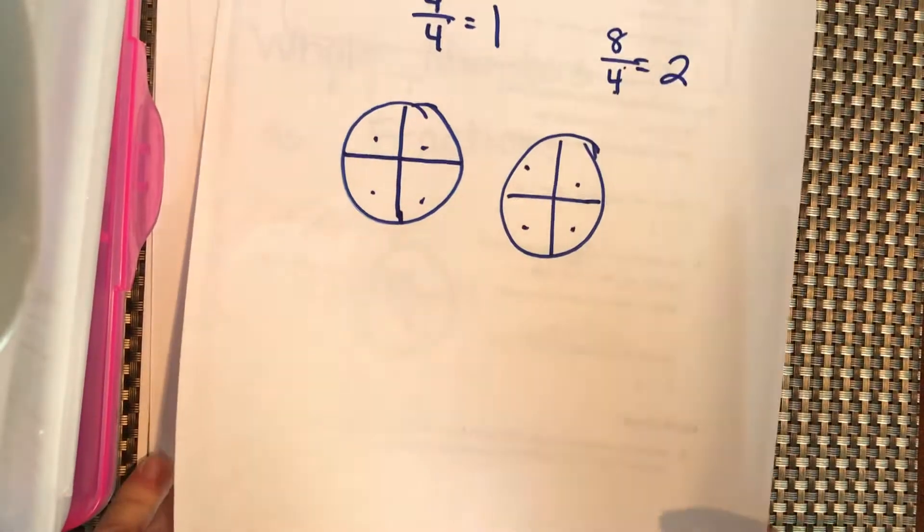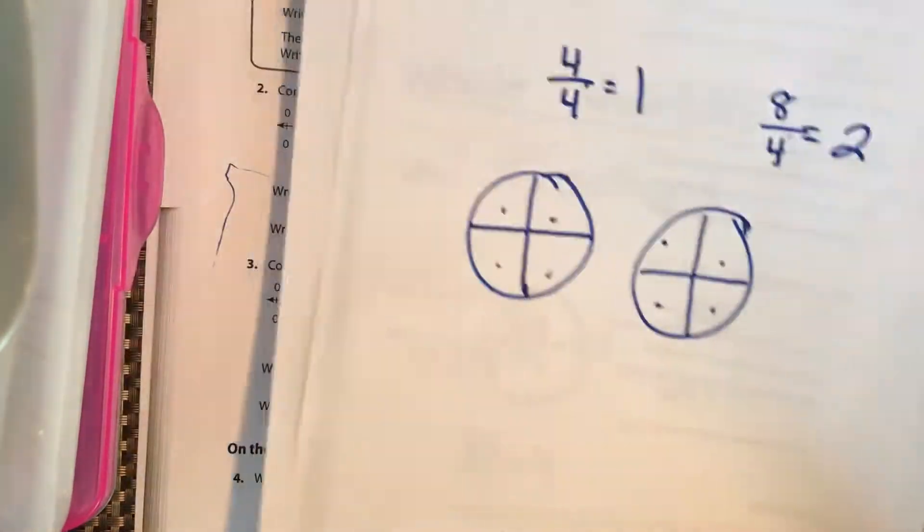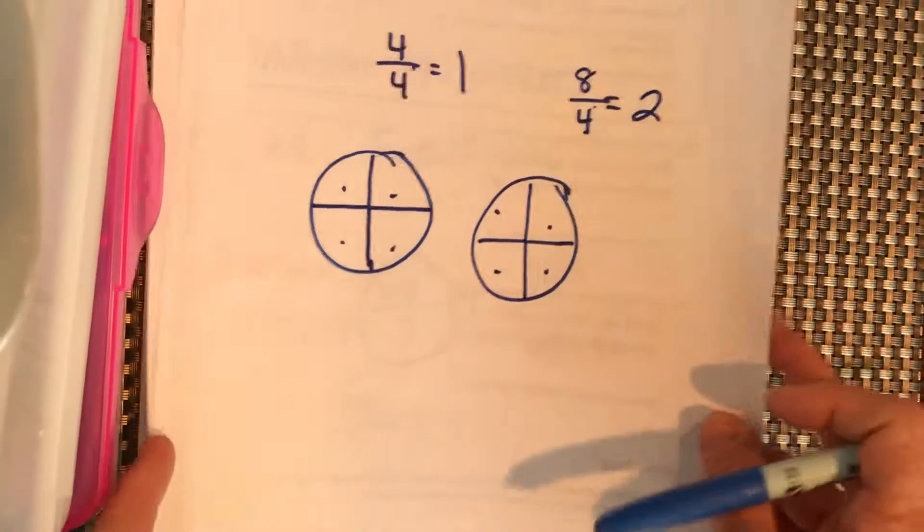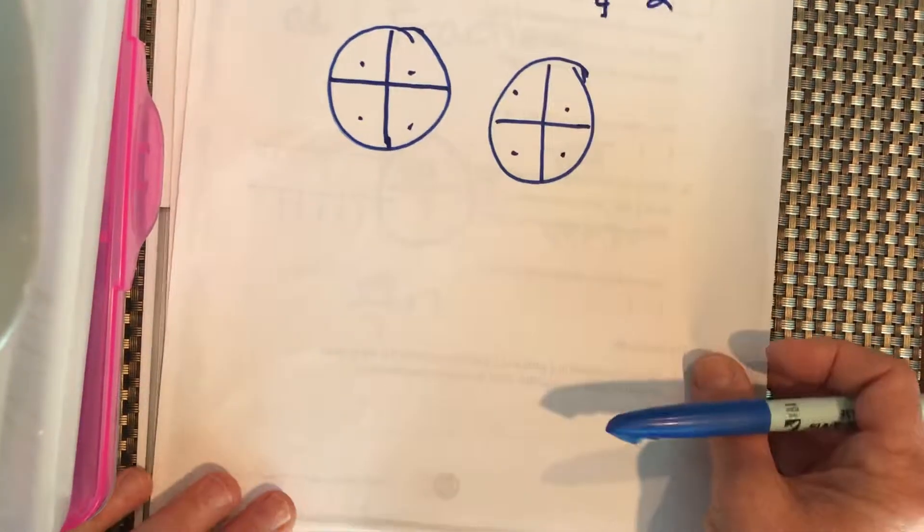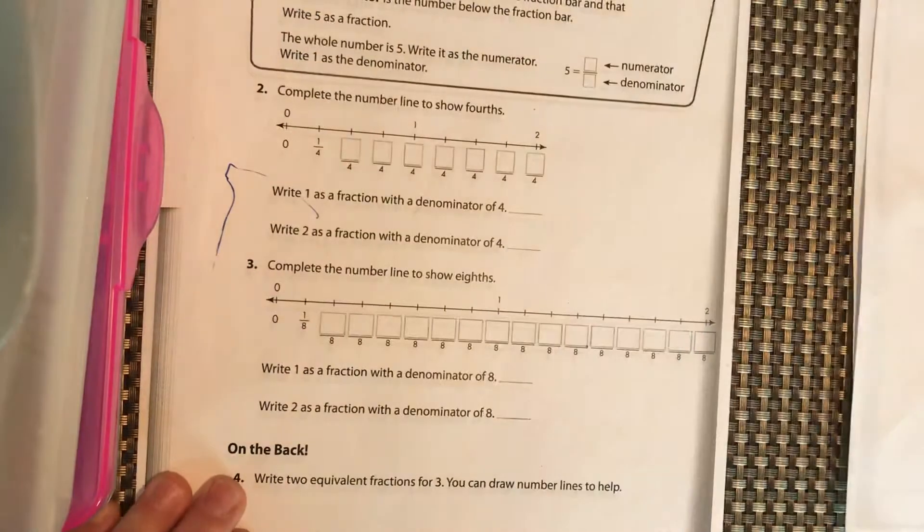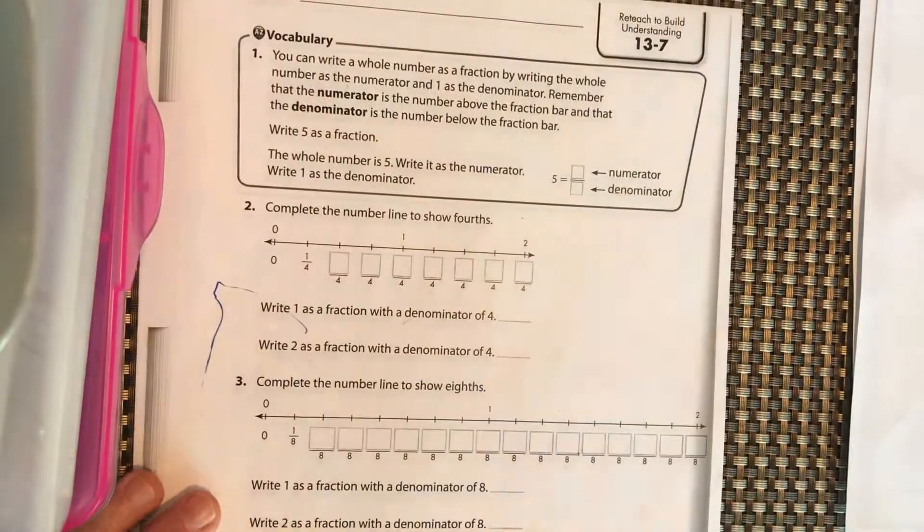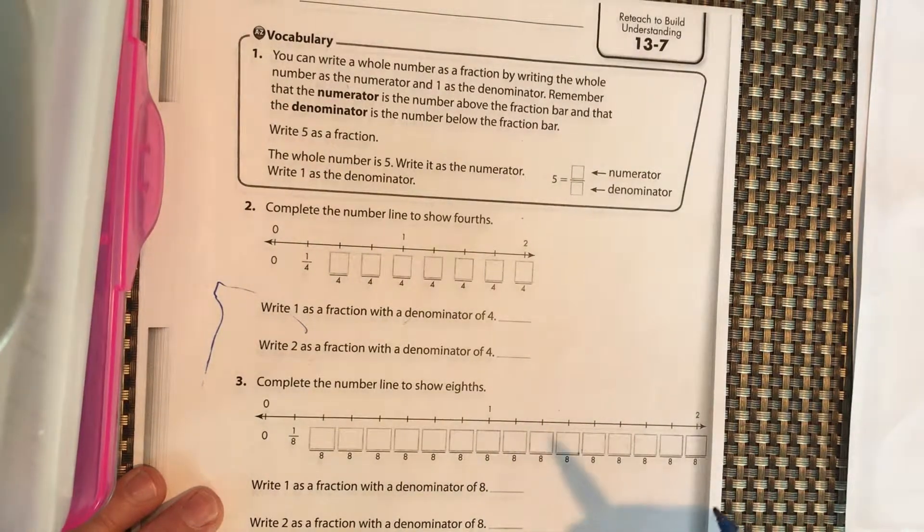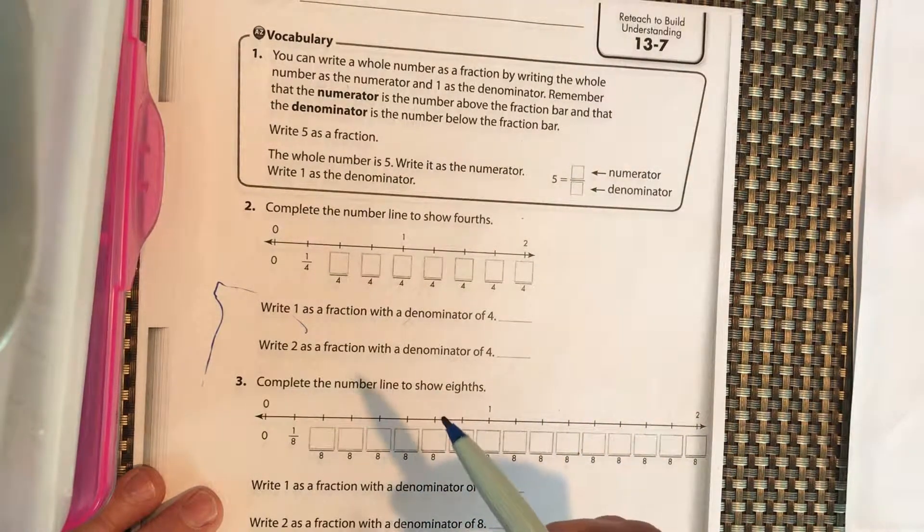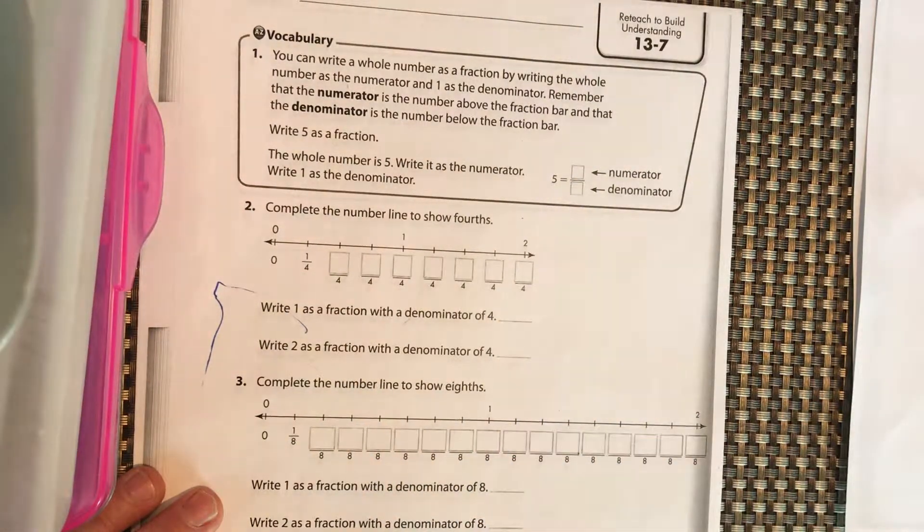So let's take a look here. You can write a whole number as a fraction by writing the whole number as the numerator and 1 as the denominator. Remember that the numerator is the number above the fraction bar, and the denominator is the number below the fraction bar.